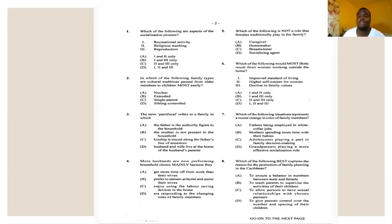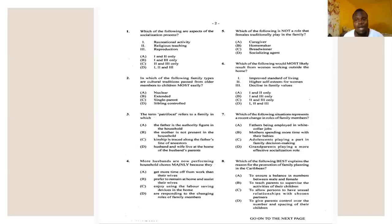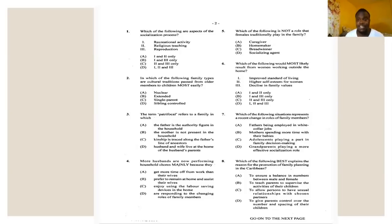Number five says: which of the following is NOT a role that females traditionally play in the family? Options are caregiver, homemaker, breadwinner, and socializing agent. Women were traditionally the socializing agent because they stayed home and cared for the kids — also caregiver and homemaker. The woman was not traditionally a breadwinner; it was the men who were traditional breadwinners. So the answer for number five is C — breadwinner.